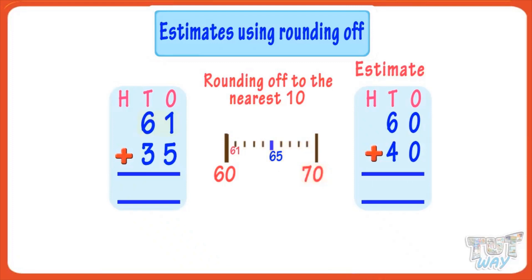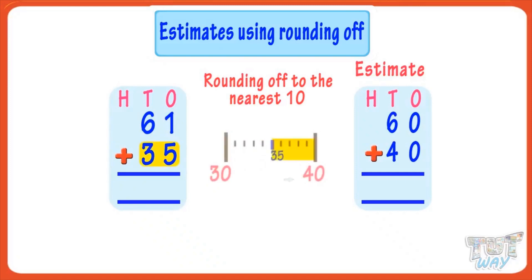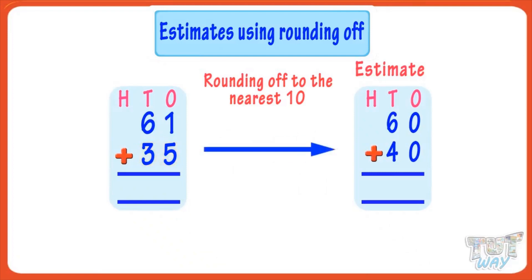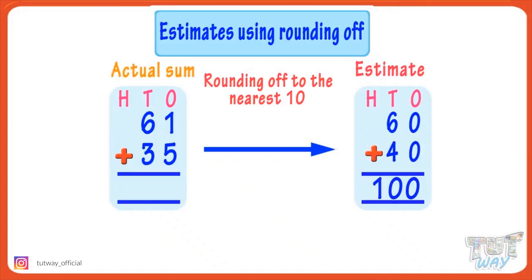Here the ones place digit is 1, which is less than five, so we round 61 down to the previous ten — that is 60. The ones place digit in 35 is 5, so we round it up to the next ten, which is 40. Adding the rounded off figures 60 and 40, we get 100. So our estimate for adding 61 and 35 is 100. If you actually add 61 and 35 you get 96, so our estimate is very close to the actual sum.